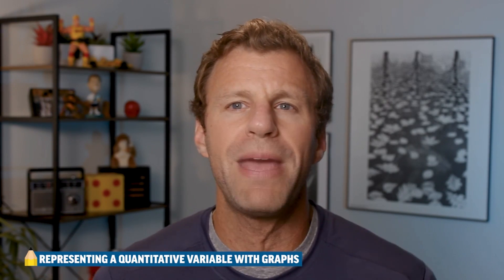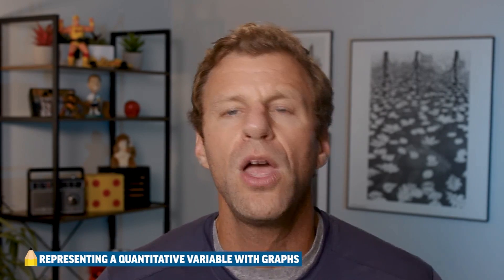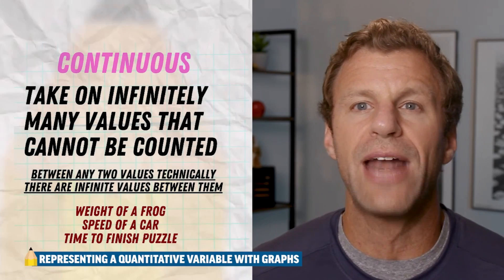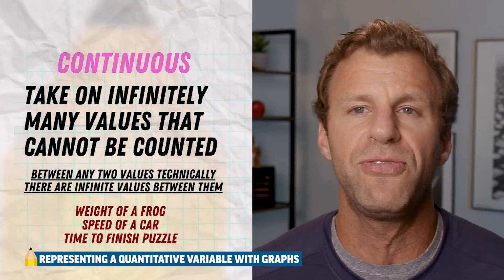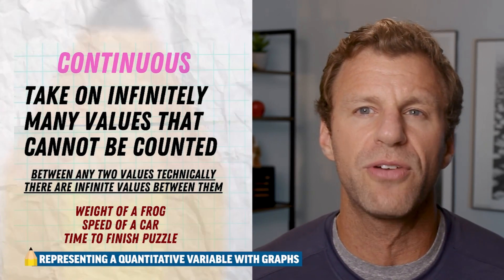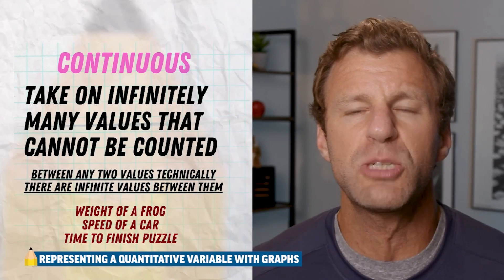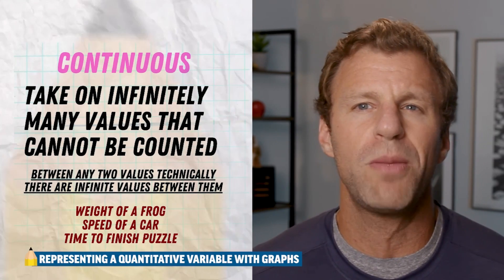And if we think about it, you could make a list of all possible outcomes. It wouldn't necessarily go on forever. Whereas a continuous quantitative variable takes on values that are not countable and basically theoretically could be infinite. For example, the weight of a frog.